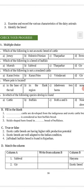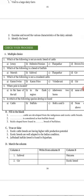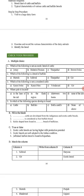Now we have multiple choice questions. Which of the following is not an exotic breed of cattle? Jersey, Holstein Friesian, and Brown Swiss are all exotic breeds. Tharparkar is an indigenous breed, so Tharparkar is the correct answer. Next: which of the following is a breed of buffalo? Gir, Tharparkar, and Sahiwal are all breeds of cattle — Murrah is the breed of buffalo.